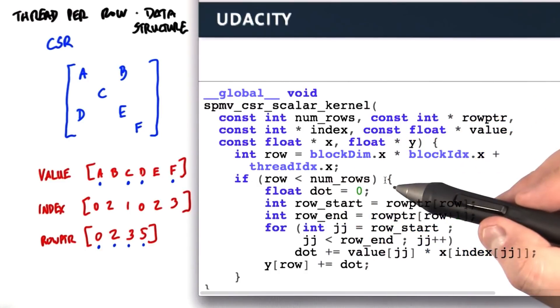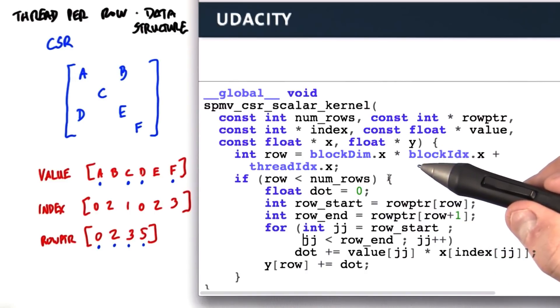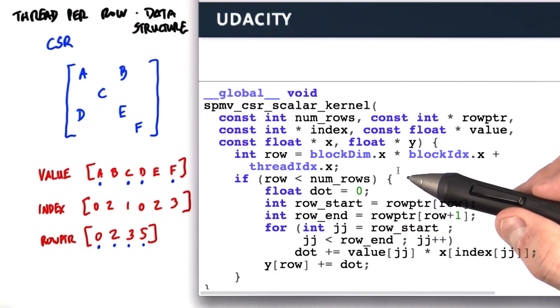Next we're going to have an if statement. If row less than the number of rows. Why do we have this if statement? We're going to launch many blocks of many threads, and it might be that the number of rows is not a perfect multiple of blocks and threads. This if statement is a common one in CUDA programs.